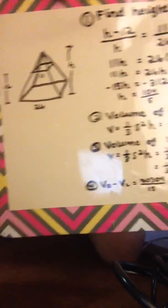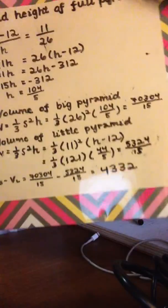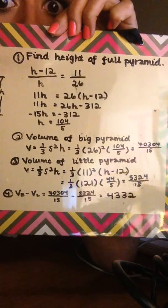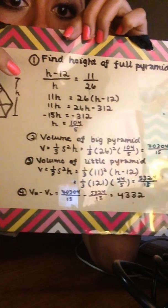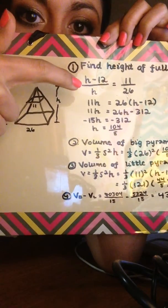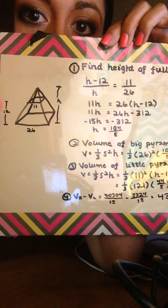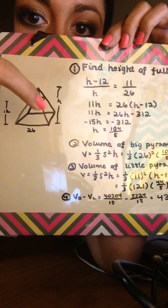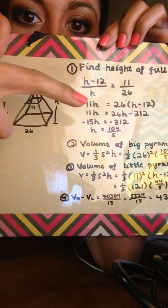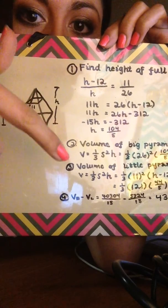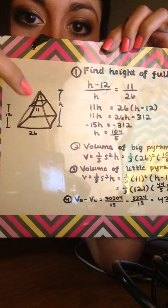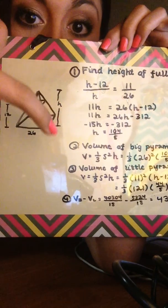So the first thing that you want to do is find the height of the full pyramid. You use the side splitter theorem, and you set up the proportion. So h minus 12 gives you this little piece, and over h. So that's the height of the little pyramid over the height of the entire pyramid.